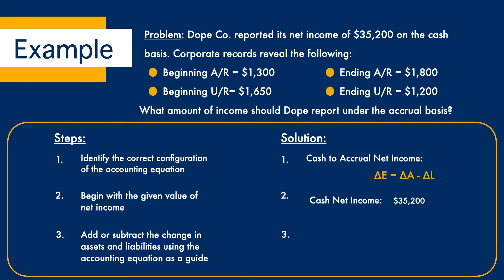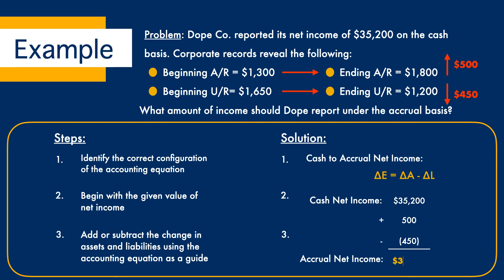Now, final step — Step 3, the most important one. We are going to add or subtract the change in assets and liabilities using the accounting equation as a guide. Looking back at the question, we notice that there has been an increase in the accounts receivable account — which is an asset account — by $500. The accounting equation dictates that we add any increase in assets, so we add the change of $500 back into the cash basis net income. Following the same with the unearned revenue account, which is a liability, we notice that the account decreased by $450. The accounting equation tells us that we should subtract any change or increase in a liability account. Tallying the final answer gives us an accrual net income of $36,150.